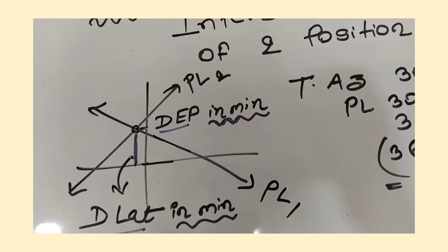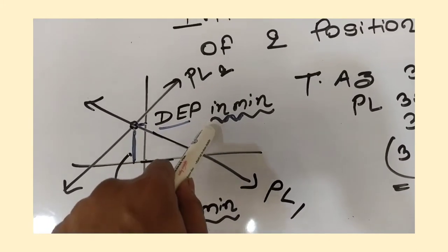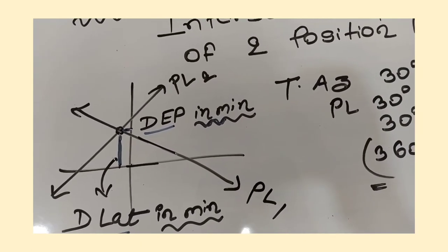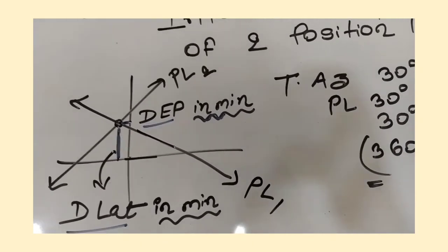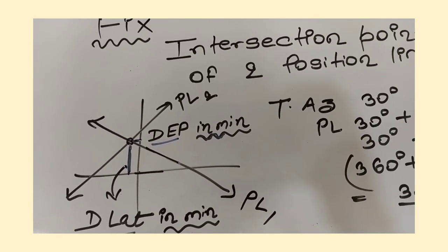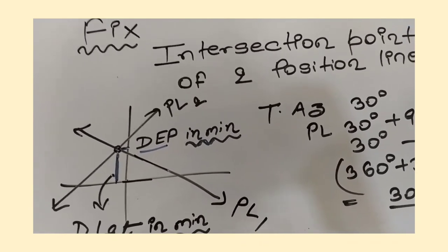That will give you the d long. D long you got, you are already having a longitude in the question. That longitude plus or minus d long you will come to the arrival longitude. It's matching with day's work. That's why I told you, you should know how to solve day's work question first, then you should come to staggered.